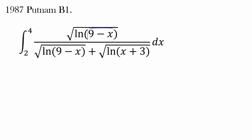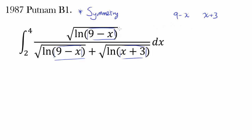We are primarily concerned with (9 minus x) and (x plus 3). Whenever you have a mathematical problem, it is advisable to exploit symmetry or create symmetry, because symmetry usually simplifies the problem and sheds light on the nature of the question. The natural substitution to cause symmetry is to let u be the average of these two expressions, giving us symmetric terms of natural log.